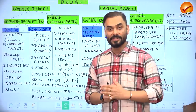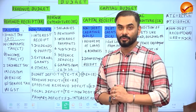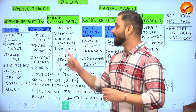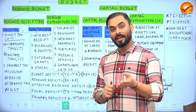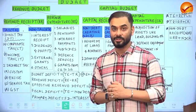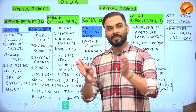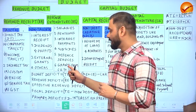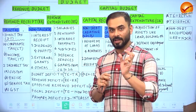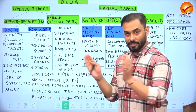Revenue expenditure includes salaries and pensions paid to government employees, interest payments on loans taken by the government, subsidies provided to various sections of society, defense and administration maintenance costs, and grants given by the center to state governments and union territories — money that is given but not returned. Revenue receipts plus revenue expenditure together form the revenue budget.